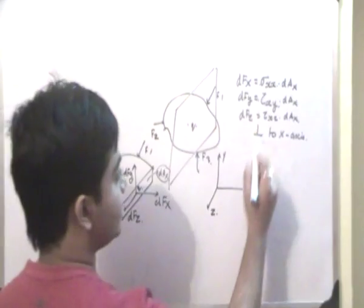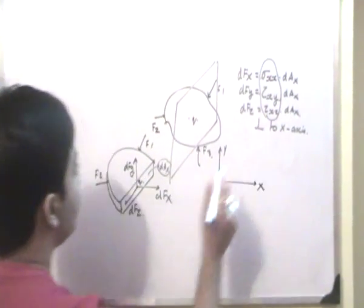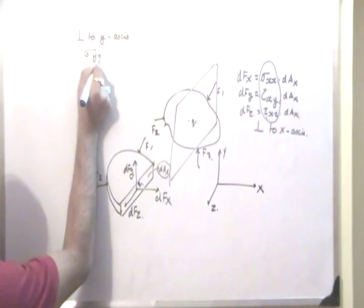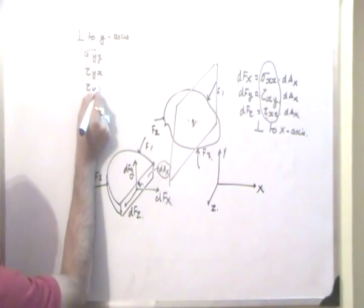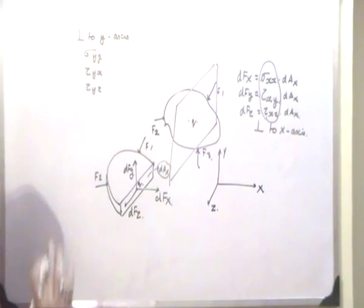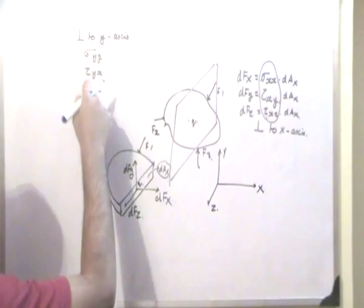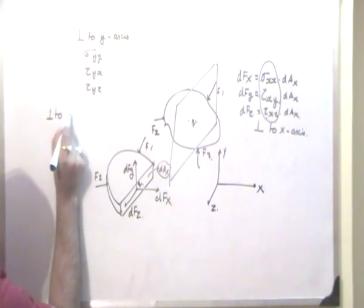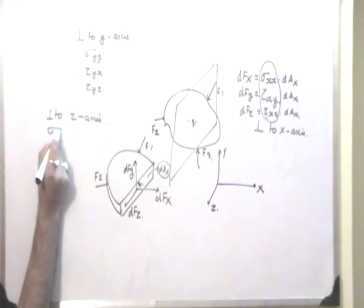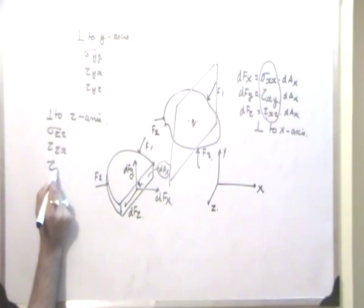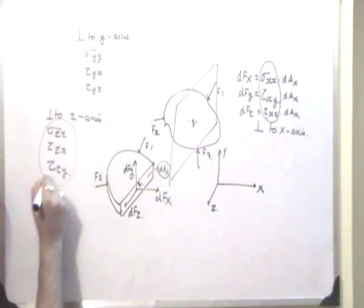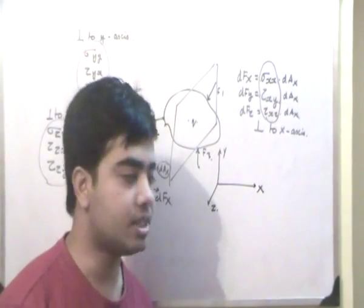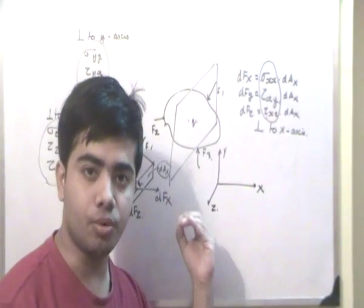These are my three stress components from the plane perpendicular to the X axis. When we cut a plane perpendicular to the Y axis, we again get three stress components: Sigma YY, tau YX, and tau YZ — where Y denotes the axis to which the plane is perpendicular. Cutting a plane perpendicular to the Z axis gives Sigma ZZ, tau ZX, and tau ZY. So these three sets of three — nine stress components in total — are required to describe the stress at point Q.